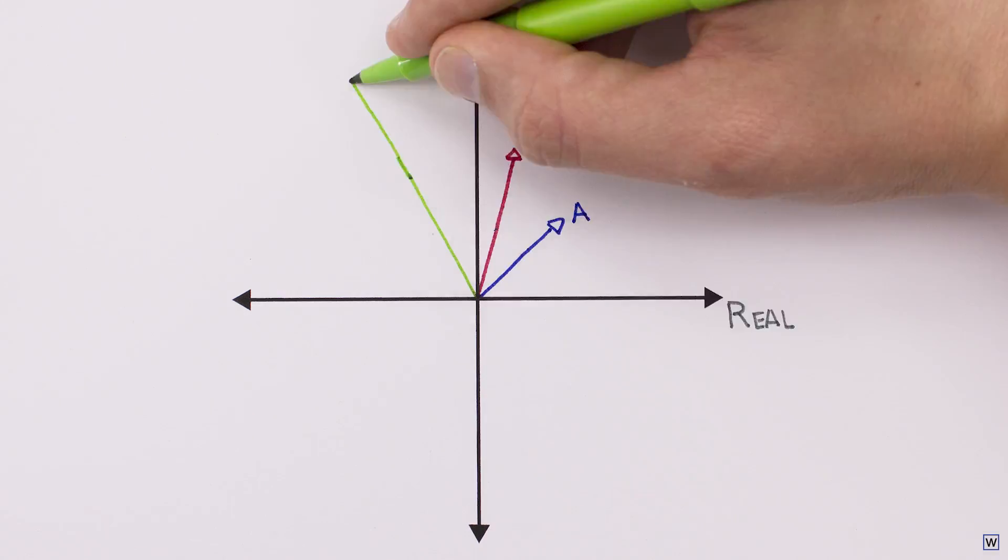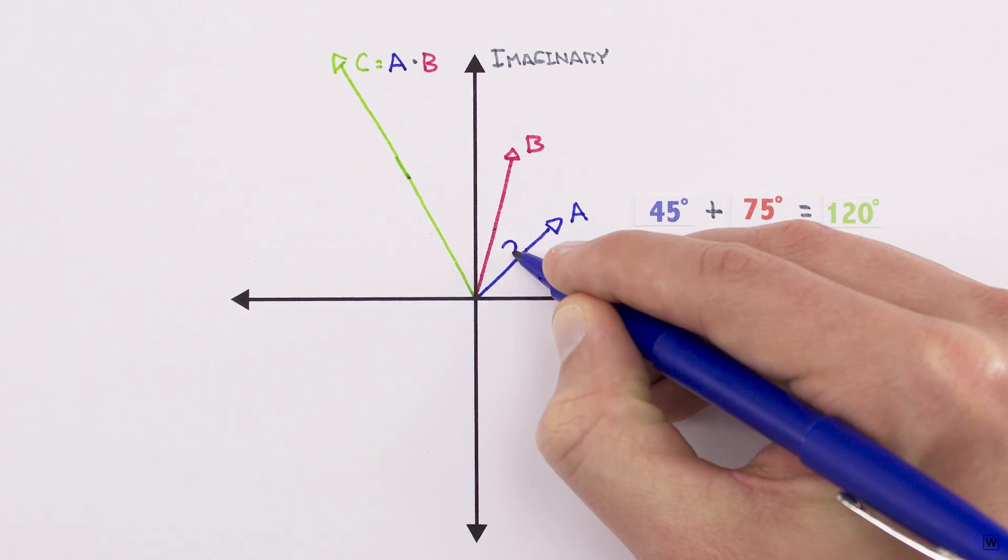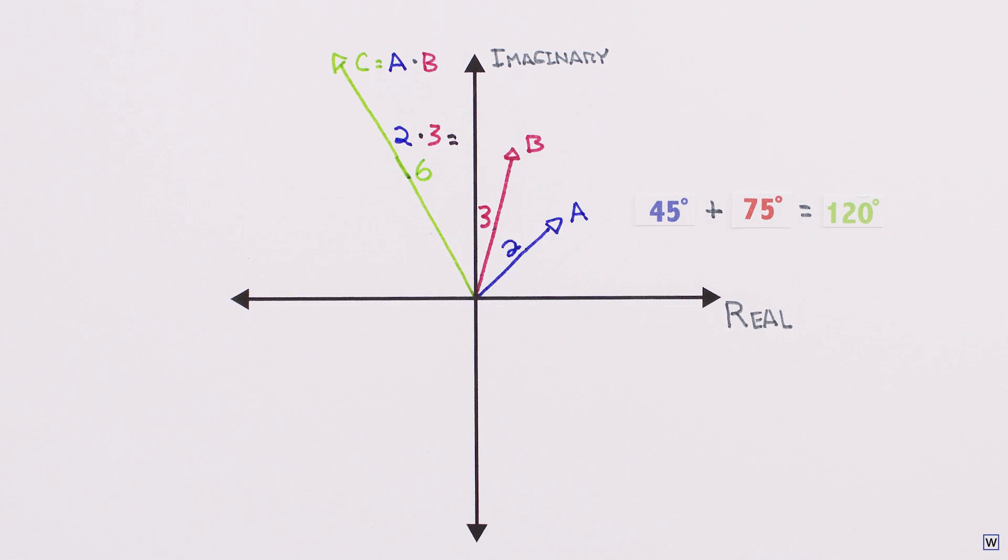We now have the complete picture. When we multiply complex numbers on the complex plane, their angles from the real axis add, and their distances from the origin multiply. This is the connection we were looking for between complex multiplication and the complex plane.